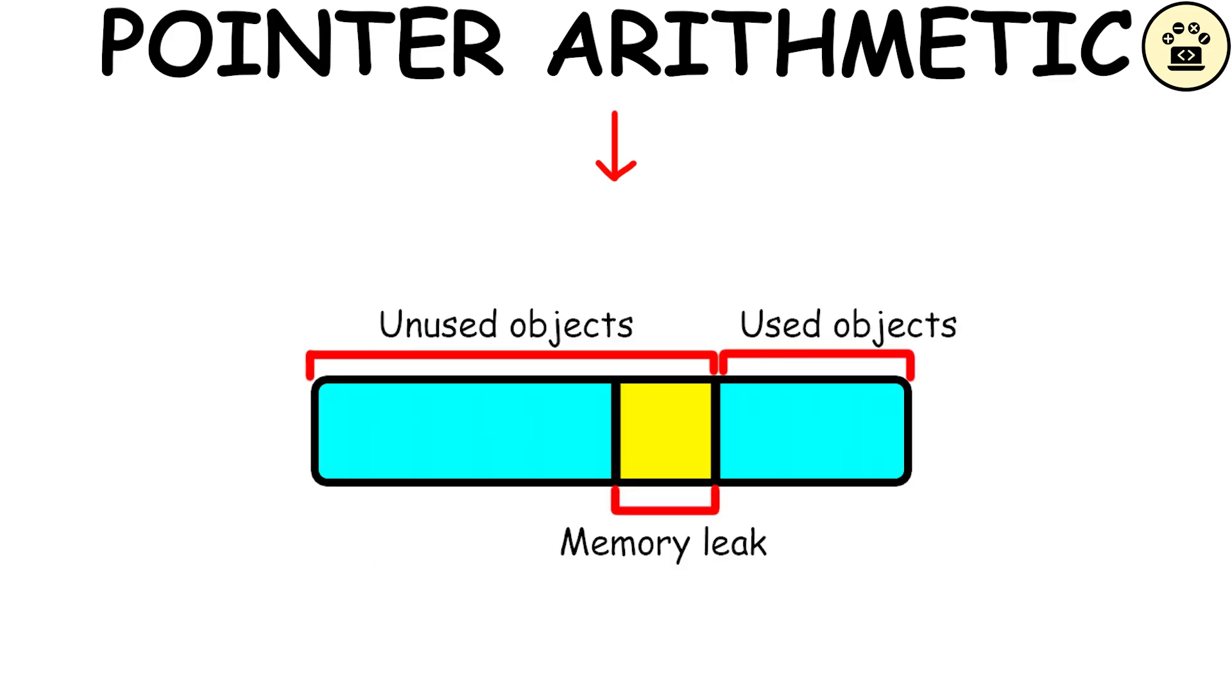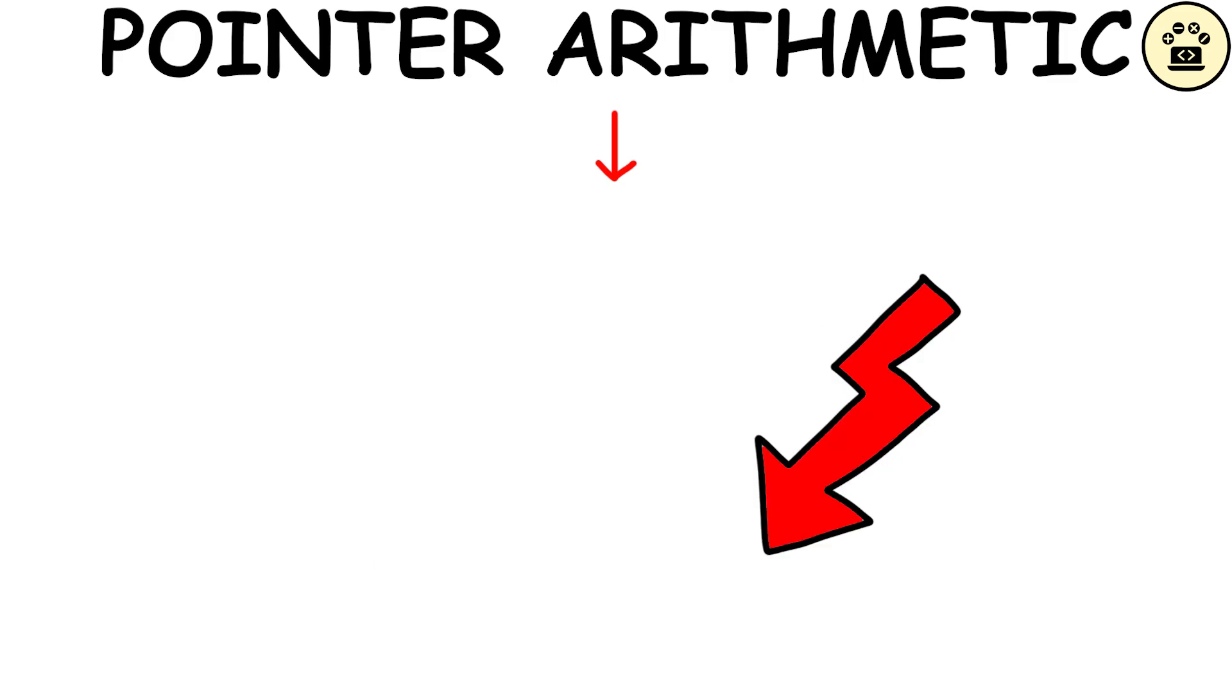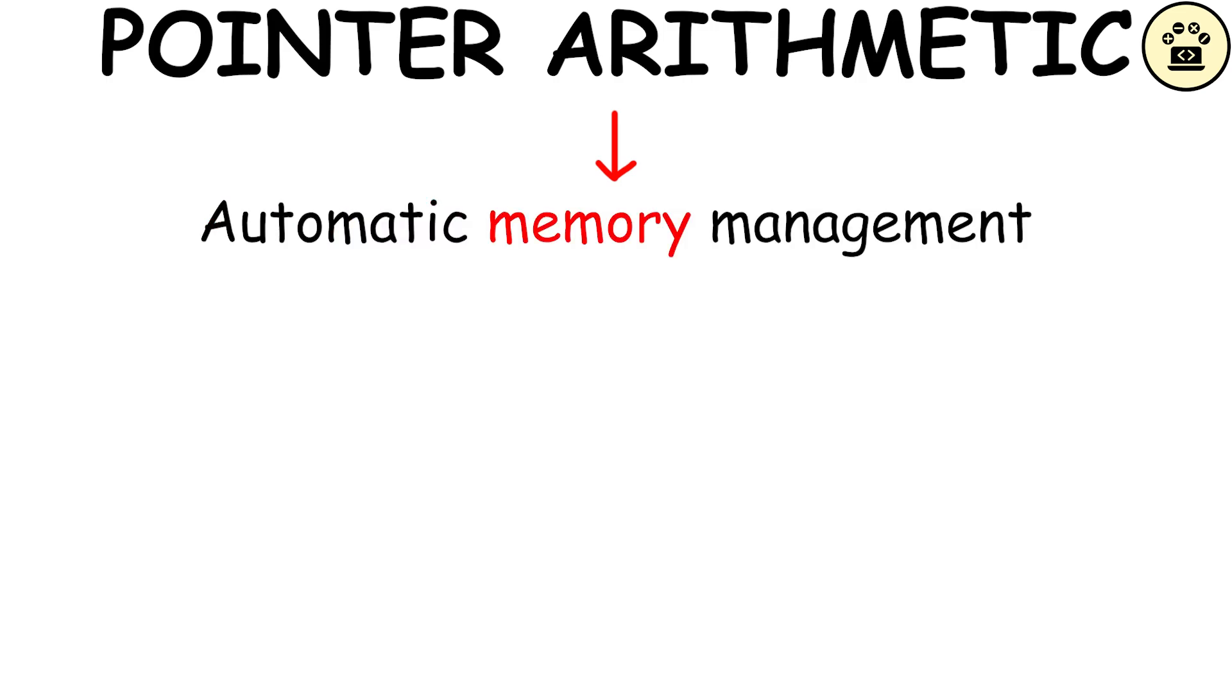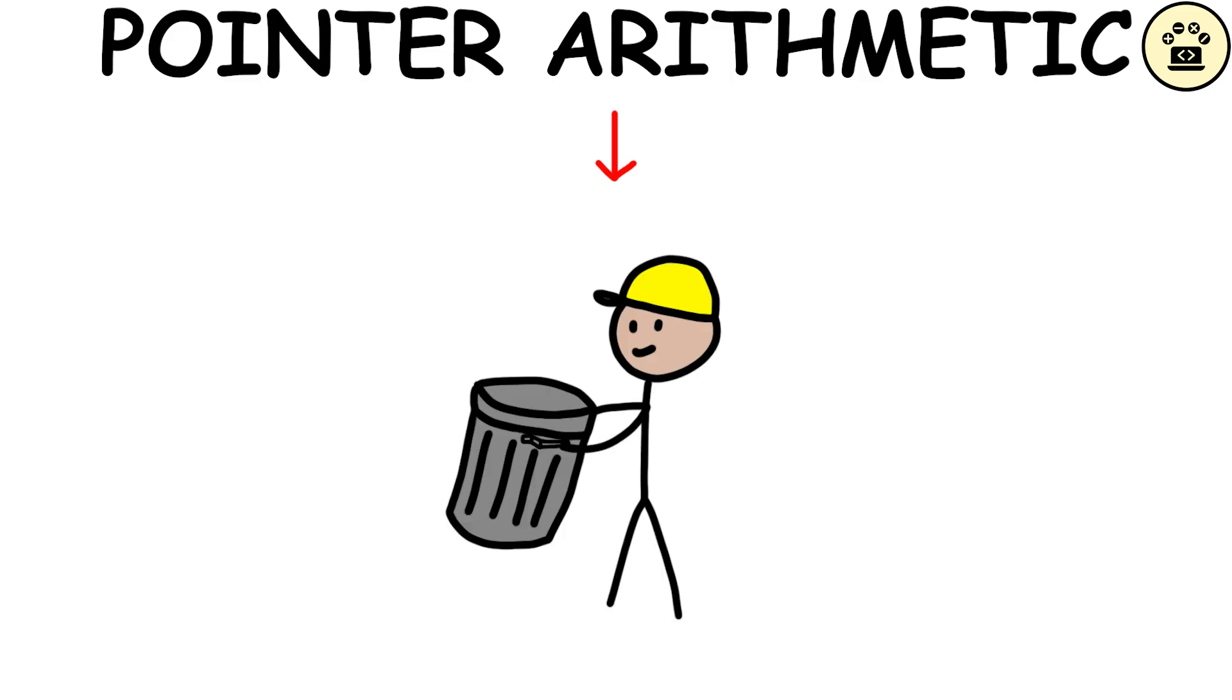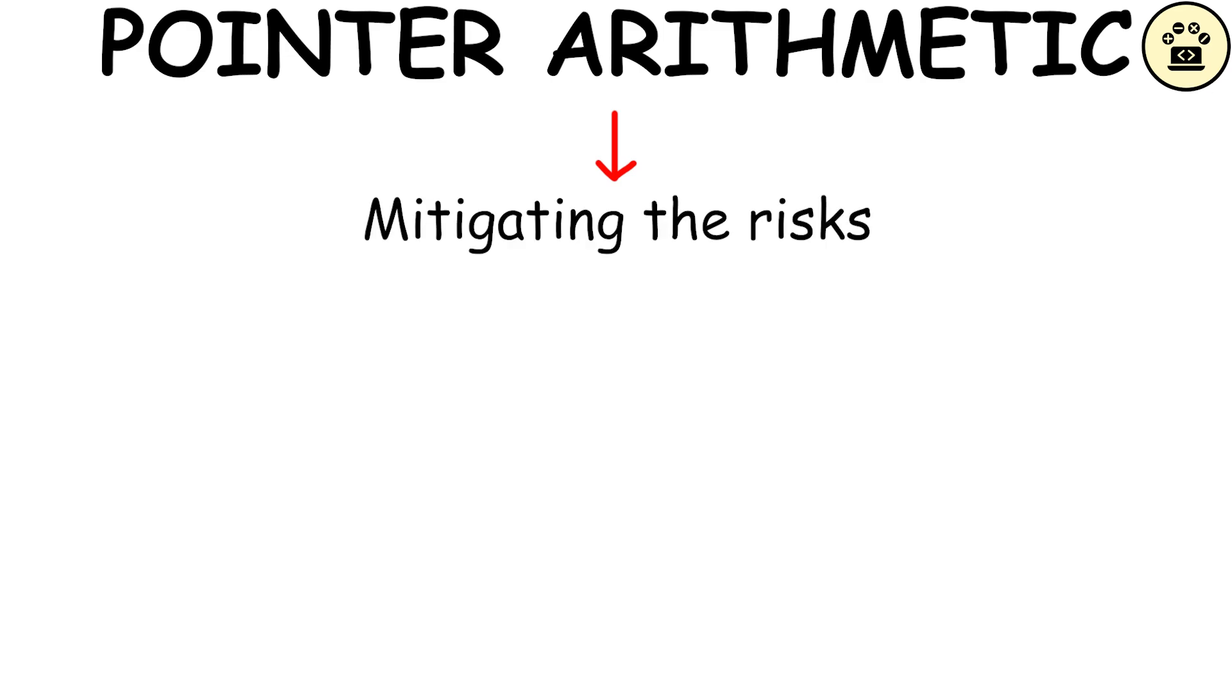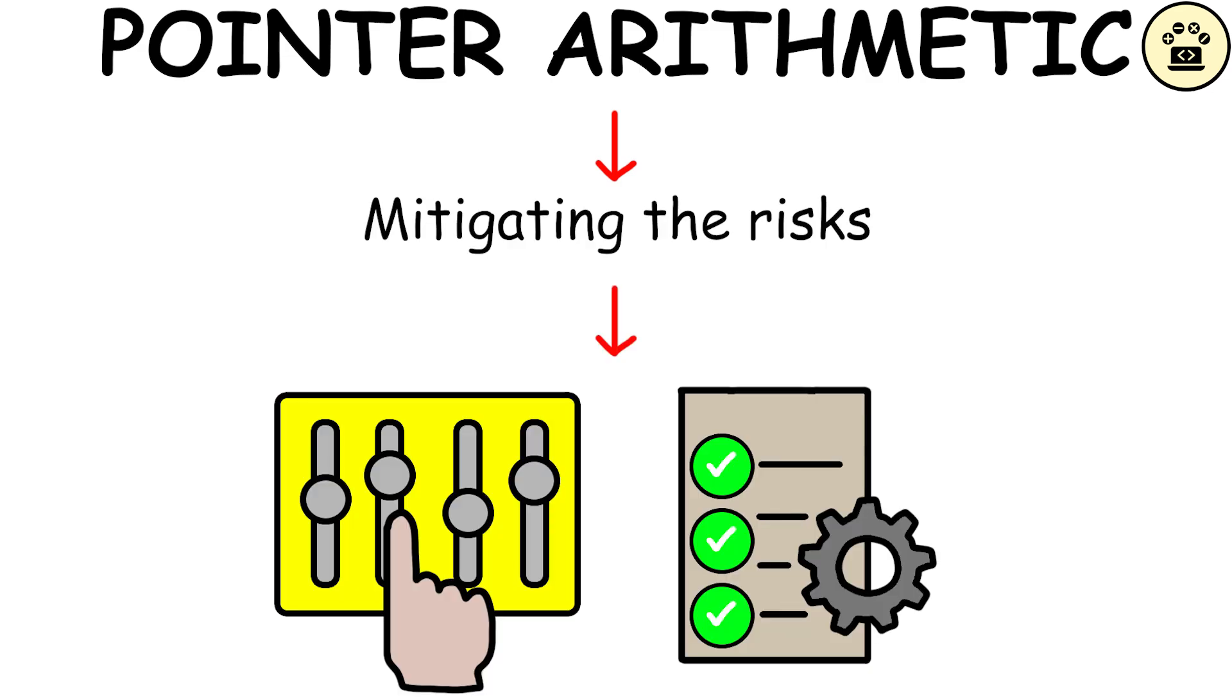Or memory leak, failing to release unused memory, which can degrade program performance and eventually lead to a crash. Contrarily, automatic memory management, present in high-level languages like Python, involves built-in garbage collectors that handle memory allocation and deallocation automatically, mitigating the risks associated with manual management.